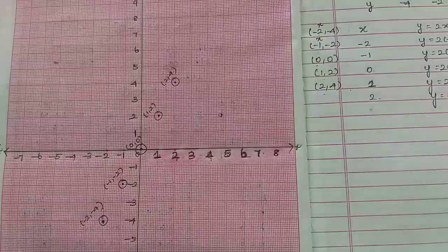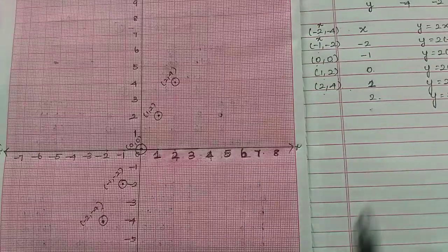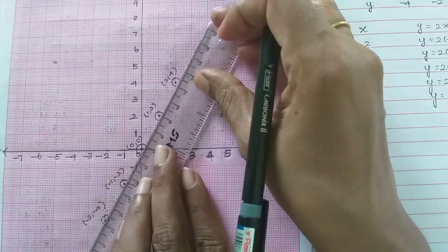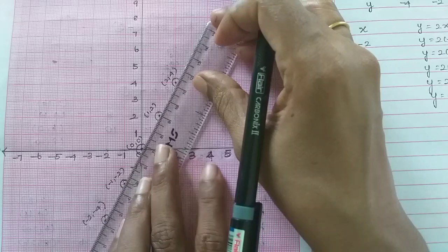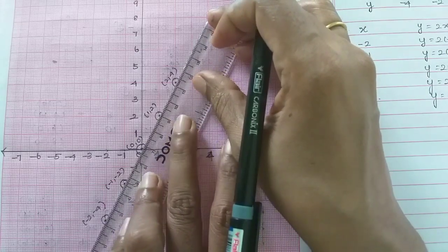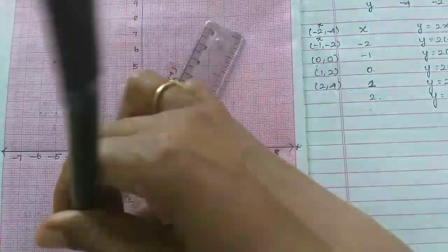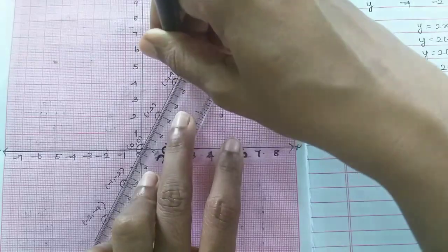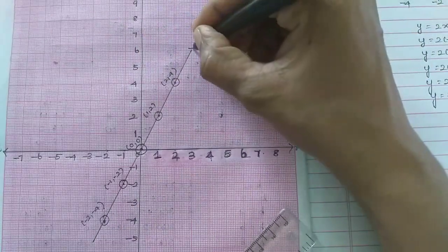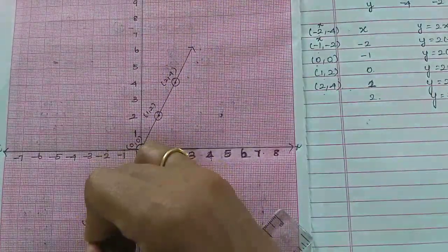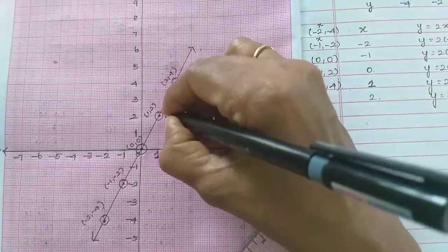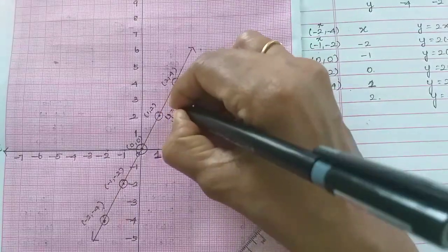Okay, now we will join these points. We will put the scale of the point, make the point correct, and put the point on the line. The line's equation is y is equal to 2x.